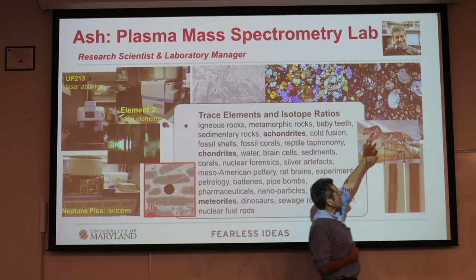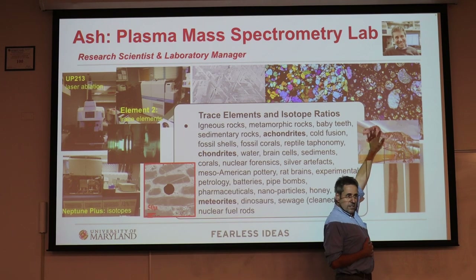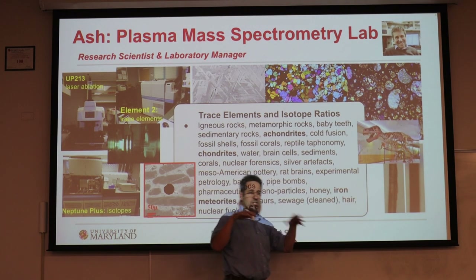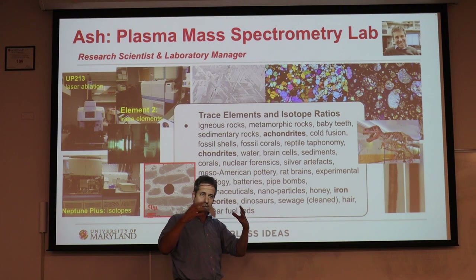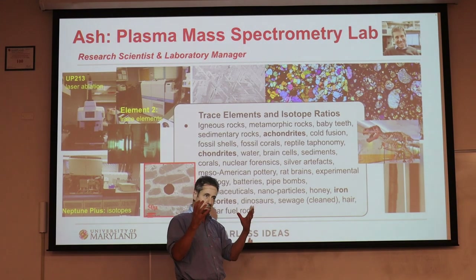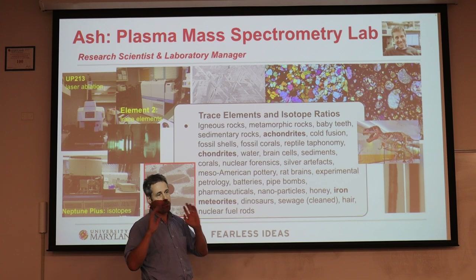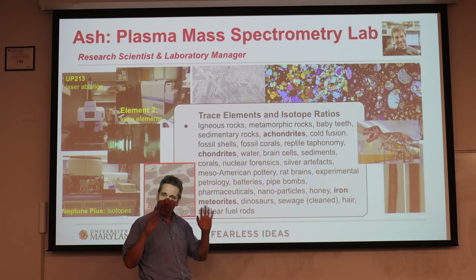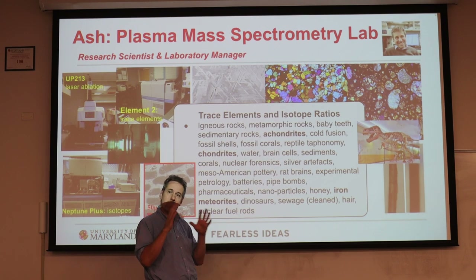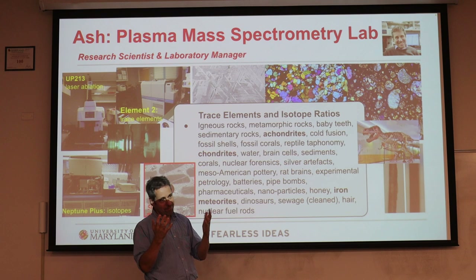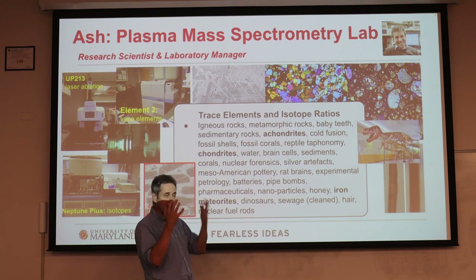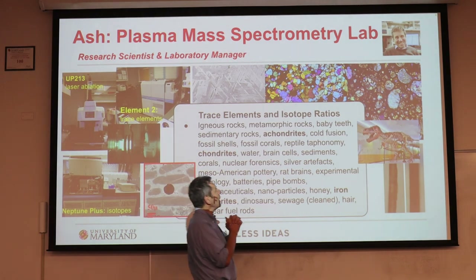We start off with chondritic meteorites like this, which are the very first sediments. They come straight out of the nebula and collect into parent bodies, and nothing's happened to them for 4.5 to 7 billion years. Now we get them, we dissolve them — we seem to be spiteful — but we dissolve them and analyze them.